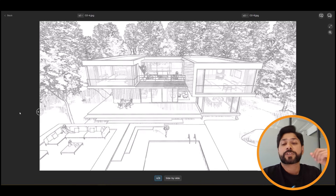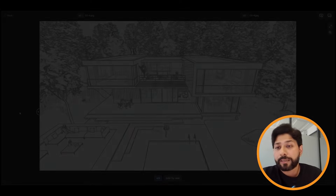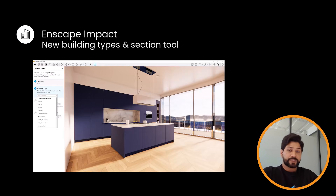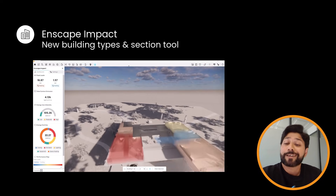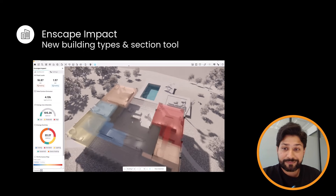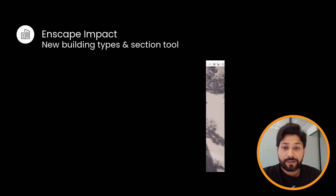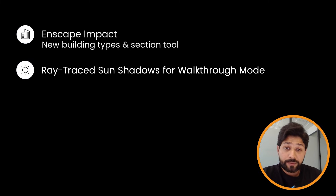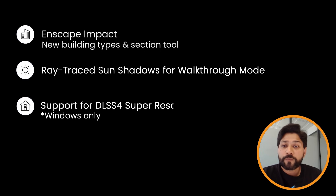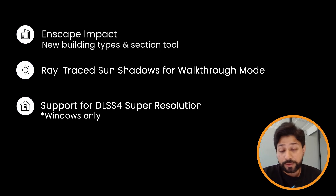Some additional updates: new building types in Enscape Impact, a section tool in Impact for room-level analysis, ray traced sun shadows for walkthrough mode, and support for DLSS 4 super resolution — also a Windows-only feature.